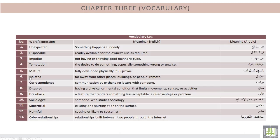The vocabulary log of this chapter includes words like: 1. Unexpected. 2. Disposable. 3. Impolite. 4. Temptation. 5. Mature.